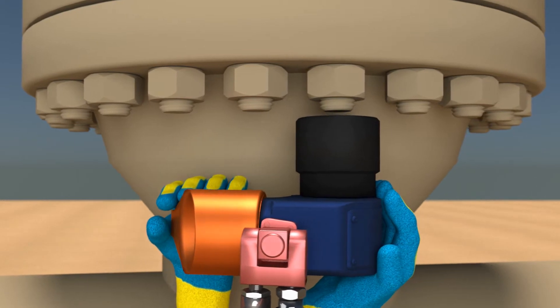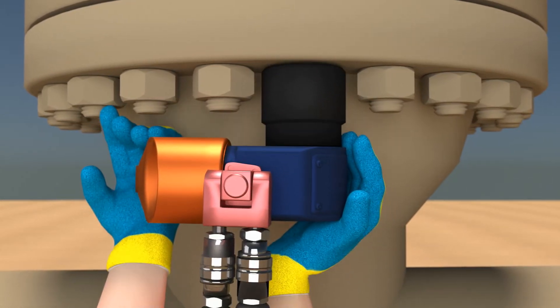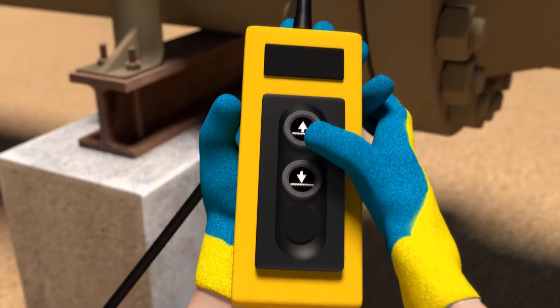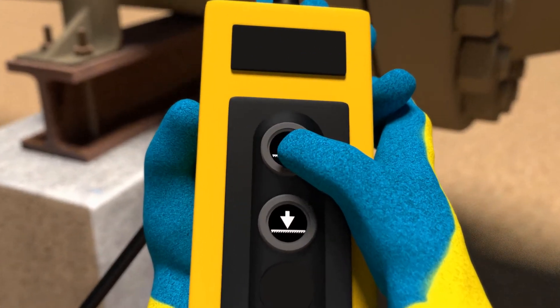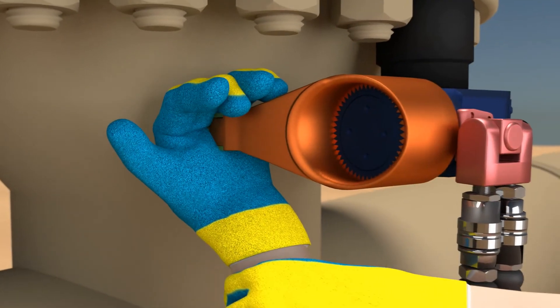Human error, caused by fatigue, distraction, or simply mishearing the command that the handle is clear for the pump operator to activate the device, can all lead to potential accidents. Within a split second the hand becomes crushed under thousands of pounds of pressure, crushing the hand between the reaction arm and the hard point.